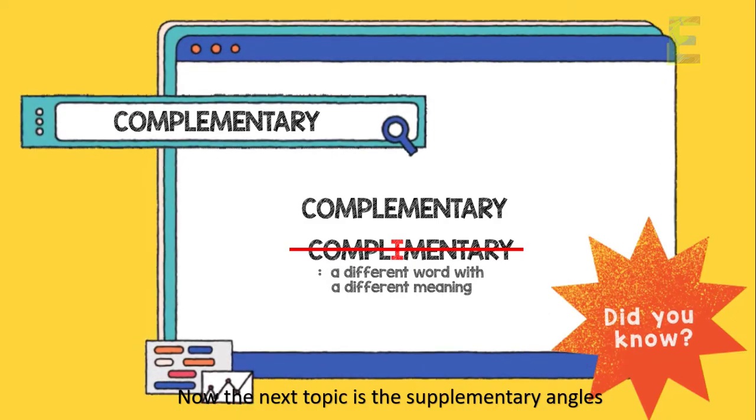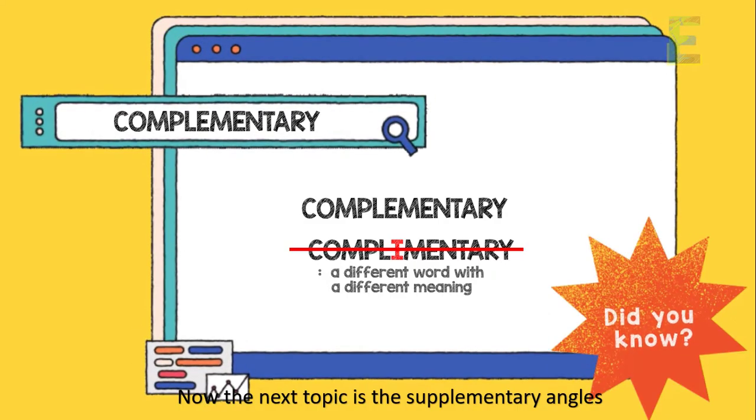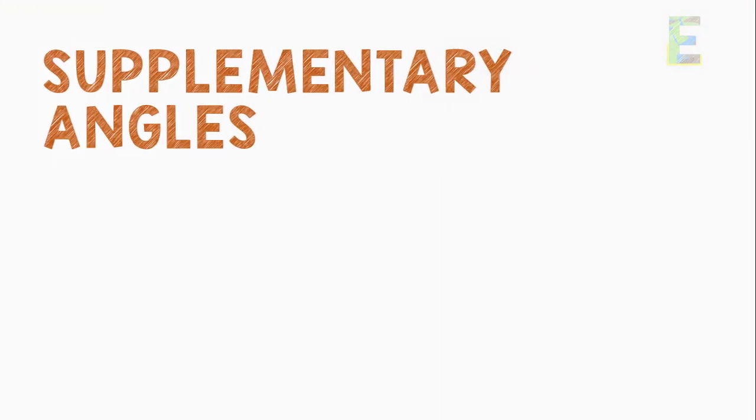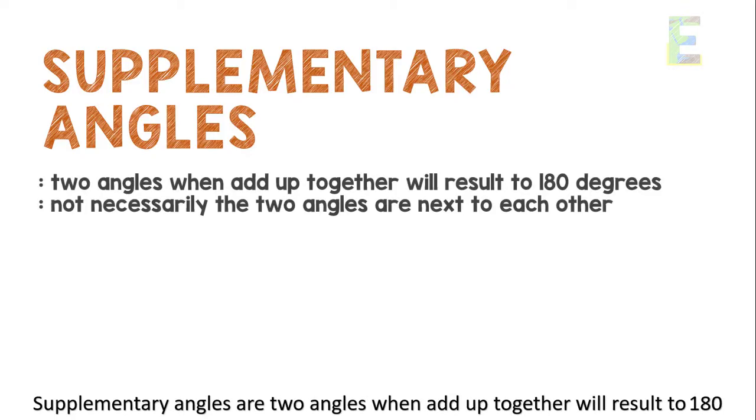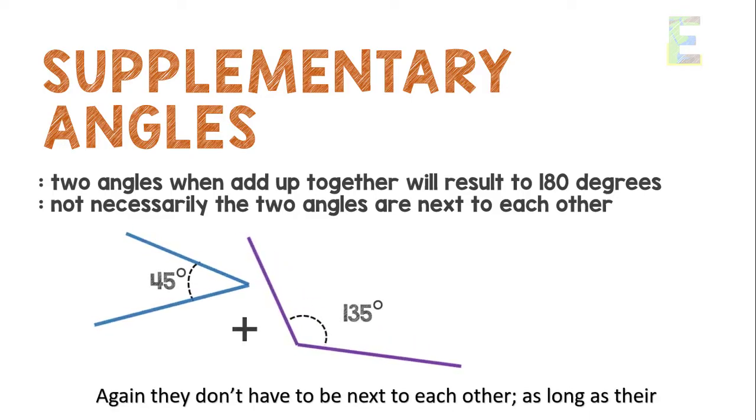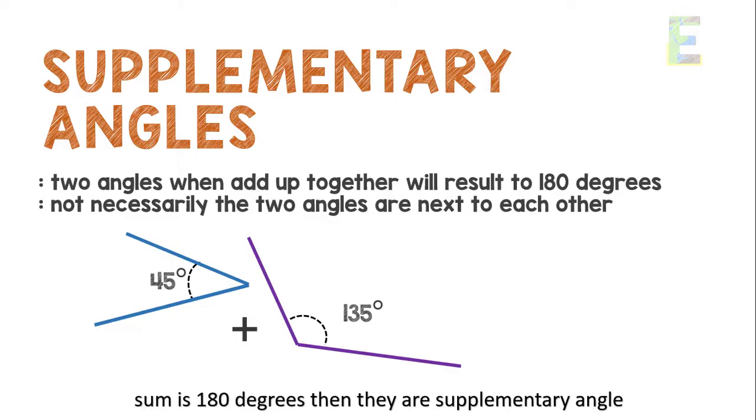Now the next topic is supplementary angles. So what are supplementary angles? Supplementary angles are two angles that when added together will result in 180 degrees. Again, they don't have to be next to each other as long as their sum is 180 degrees. Then they are supplementary angles.